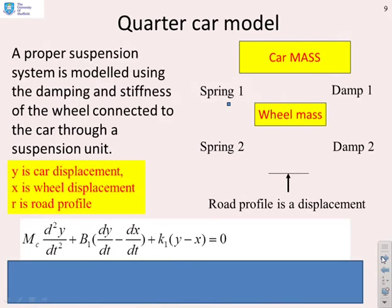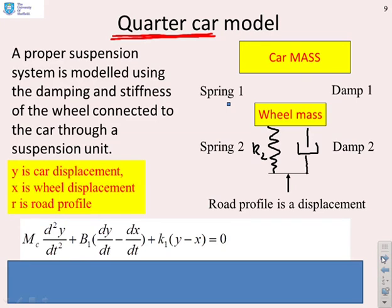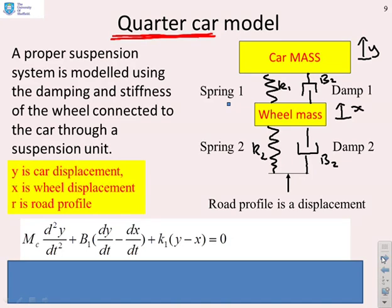Here's a sketch representing the suspension of a car using what's classically called a quarter car model, because we're only looking at one wheel. The springiness of the wheel is represented by spring K2, the damping of the wheel by damper B2, the suspension unit spring between wheel and car body is K1, and the suspension damper is B1. The vertical movement of the car is Y, the vertical movement of the wheel is X, and the vertical movement of the road is R.